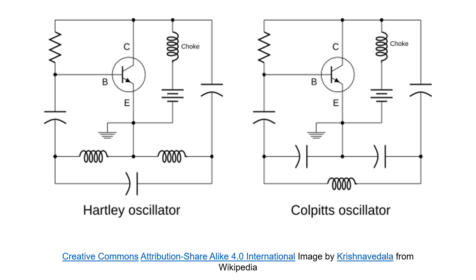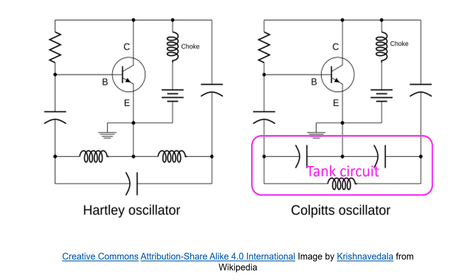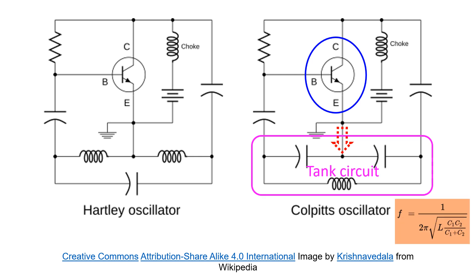While the Hartley oscillator has two inductors in series, the Colpitts oscillator has two capacitors in series in the tank circuit. Feedback for the transistor amplifier is taken from the voltage divider made of those two capacitors. While it is easy to calculate the total inductance in a Hartley oscillator by simply adding the values of the two inductors, it is more difficult in the case of the Colpitts oscillator. The product of the two capacitances must be divided by the sum of the capacitances to get the total capacitance for the resonant frequency formula.